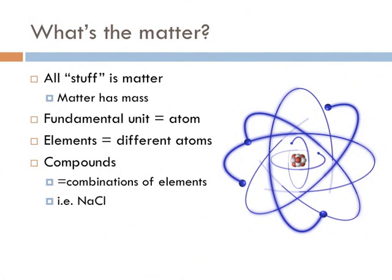And that's what we're going to talk mostly about today. Elements that you've heard: nitrogen, carbon, oxygen, all these are different elements and they're different types of atoms. Compounds are combinations of elements. For example, sodium and chlorine make sodium chloride, otherwise known as salt. That's considered a compound.